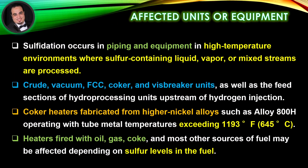Affected units or equipment: Sulfidation occurs in piping and equipment in high-temperature environments where sulfur-containing liquid, vapor, or mixed streams are processed. This includes crude, vacuum, FCC, coker, and visbreaker units.